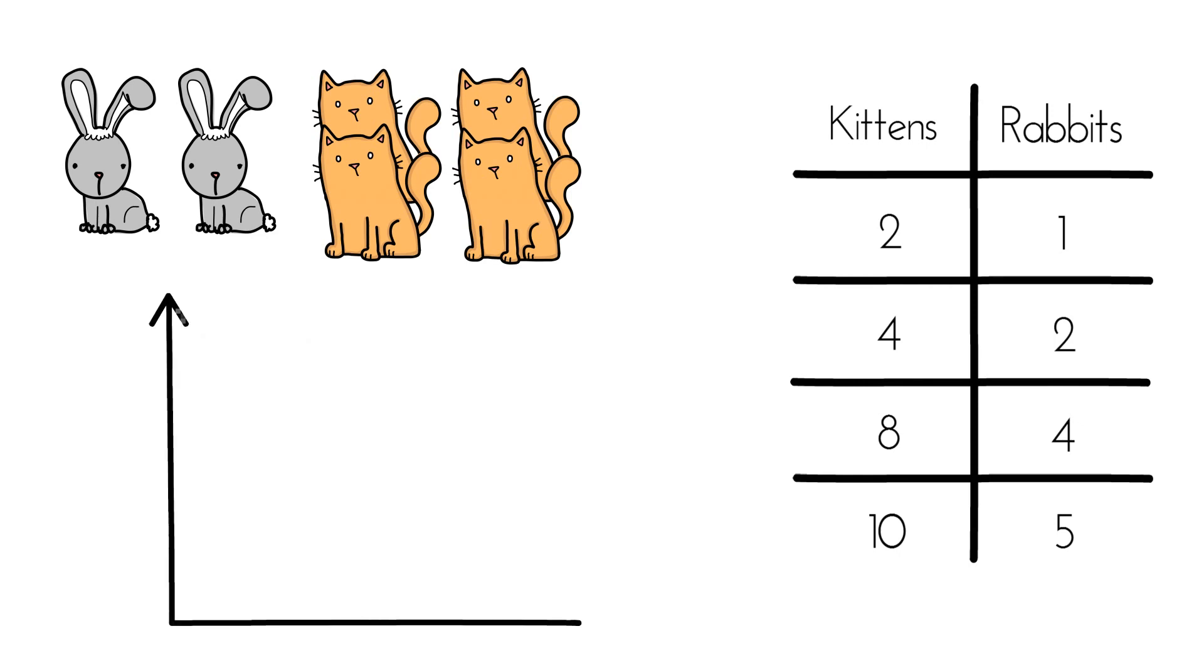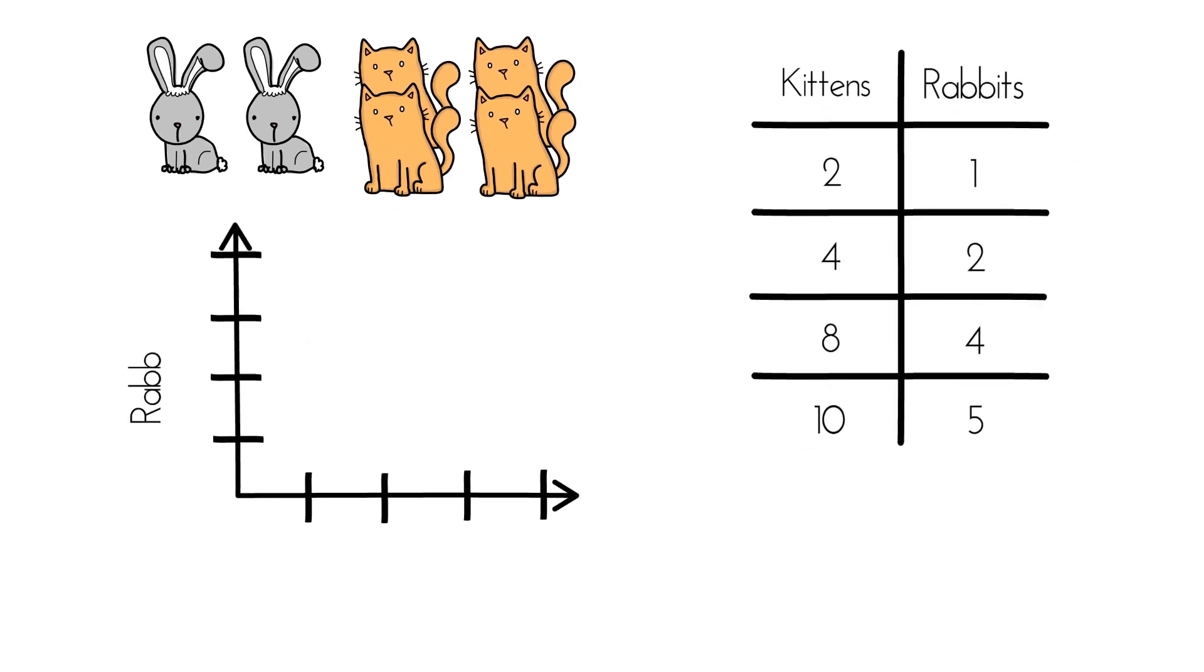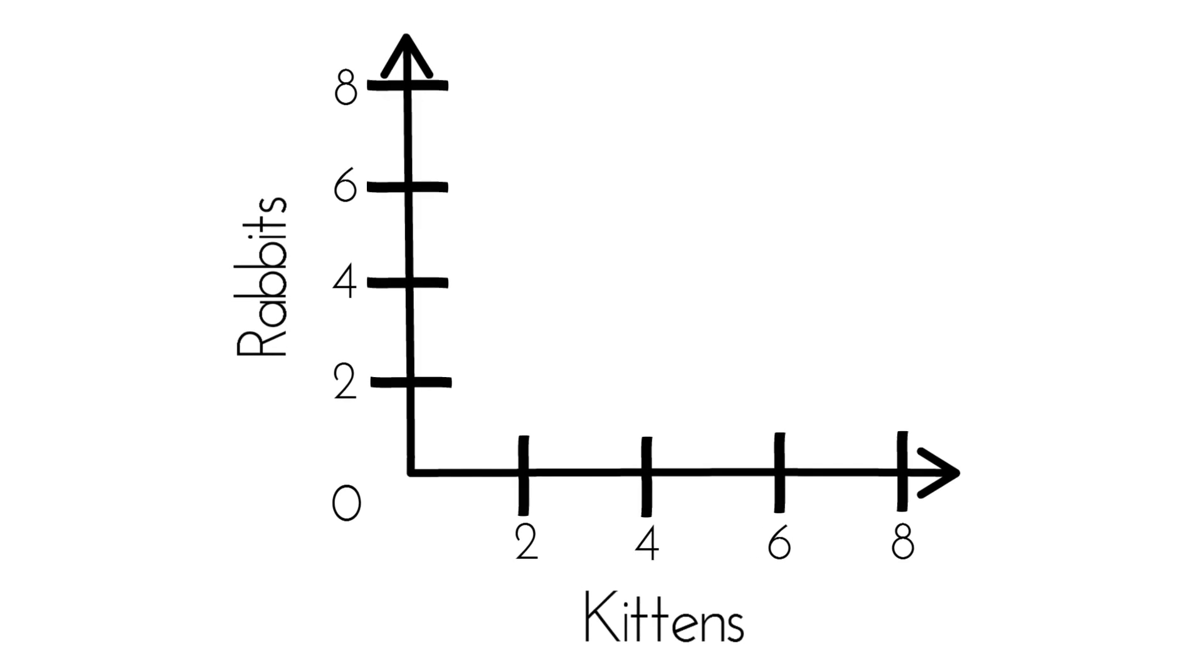Okay, well there's still another way to represent a ratio relationship with a graph. Let's plot points to show the relationship between rabbits and kittens. Two rabbits to four kittens, and this is equivalent to the ratio one rabbit to two kittens. I'll draw a line through these two points. Now watch this, this is cool.